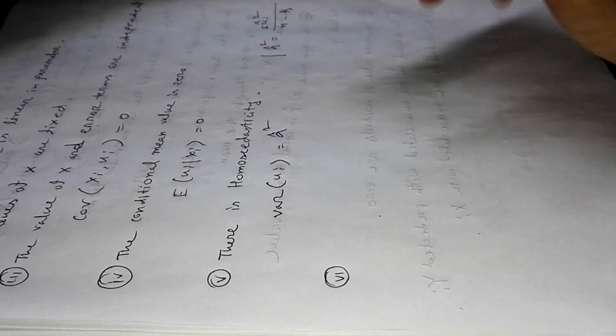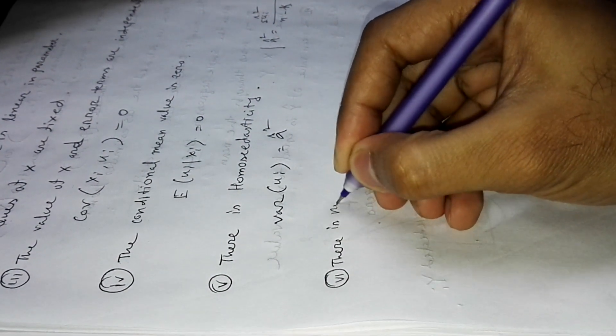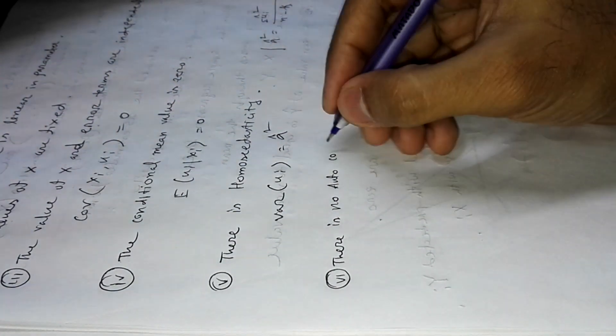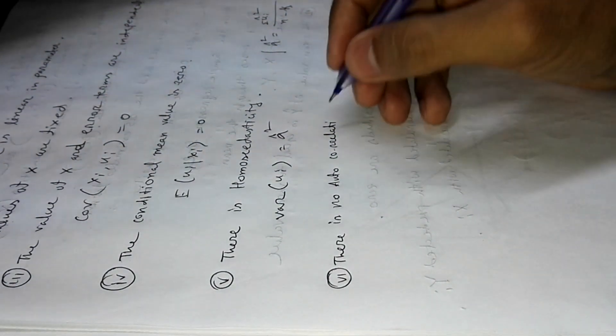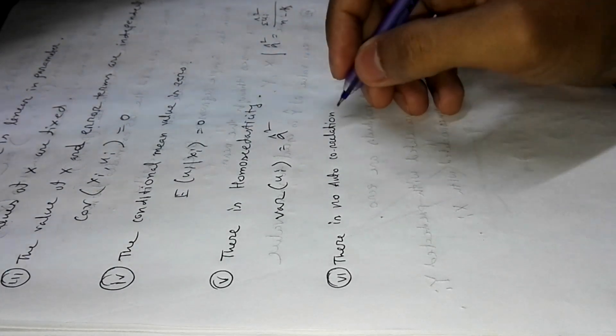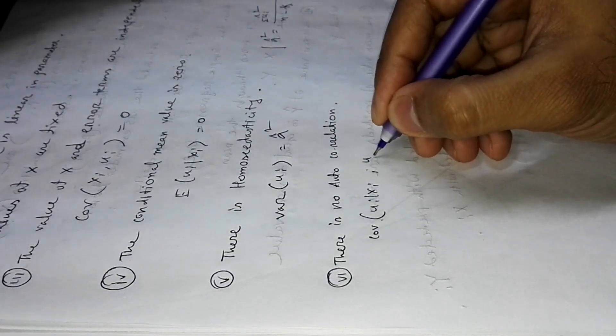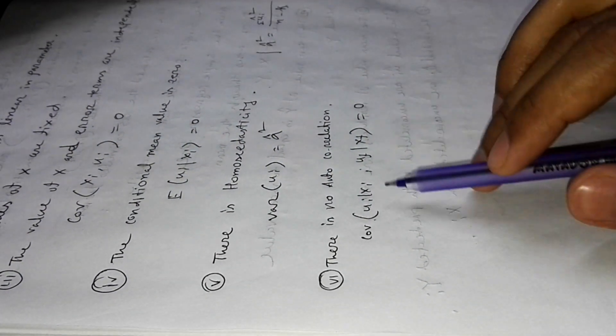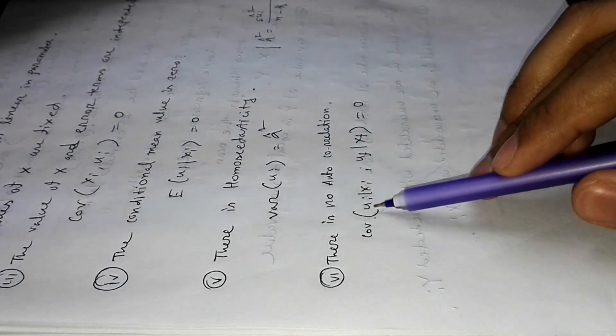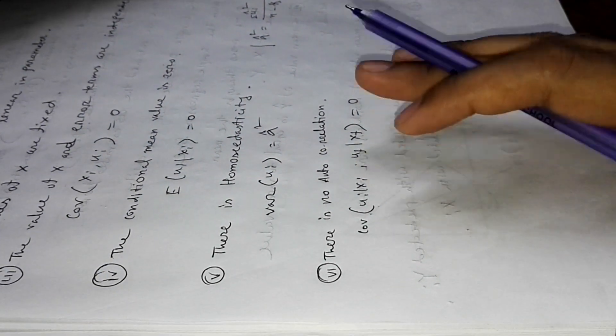The sixth property is that there is no autocorrelation. This means the covariance of (ui, xi) and (uf, xf) is equal to zero. There is no correlation between the two sets — they are independent and have no relation between them.